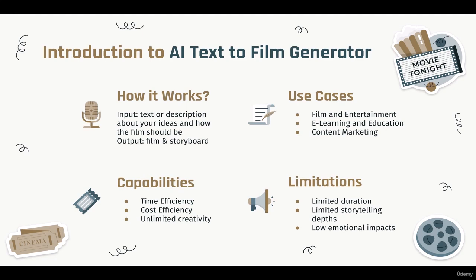The third use case is content marketing: AI text-to-film generators can be used to create engaging video content for marketing purposes. Marketers can transform blog posts, articles, or product descriptions into visually appealing videos to enhance audience engagement. If you're in the digital marketing field and want to speed up your ad video creation, you can use this AI tool — create a short film about your product and post it on social media, YouTube, or TikTok.